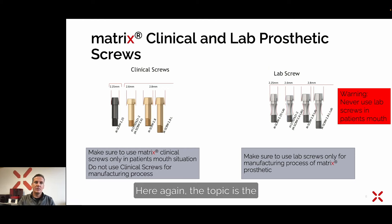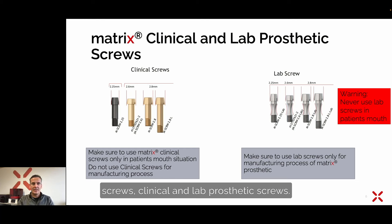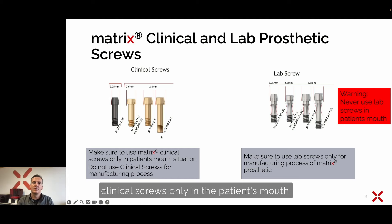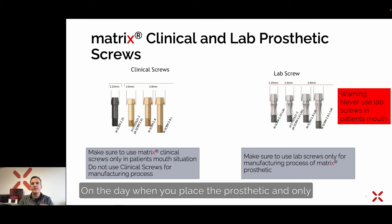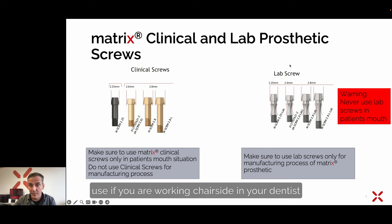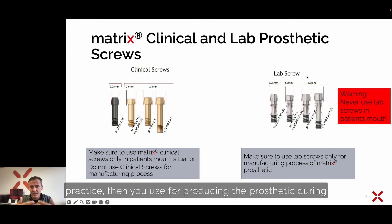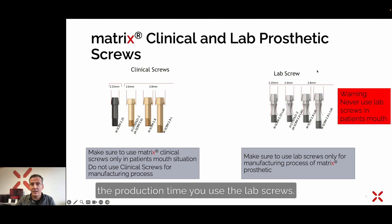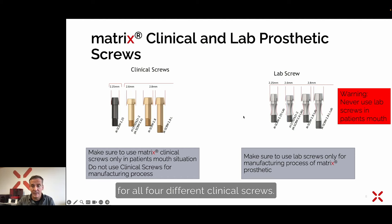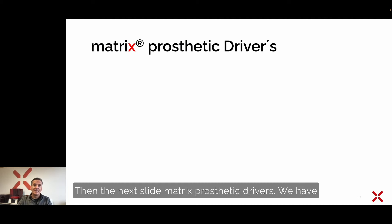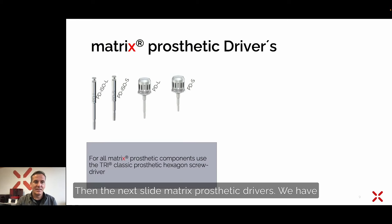Regarding clinical and lab prosthetic screws: on the left side you see all the different clinical screws. It is very important that you use these clinical screws only in the patient's mouth on the day you place the prosthetic. During the production time you use the lab screws, which are available for all four different clinical screws. Never use a lab screw in the patient's mouth.